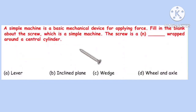Question 21. A simple machine is a basic mechanical device for applying force. Fill in the blank about the screw, which is a simple machine: 'The screws are [blank] wrapped around a central cylinder.' Correct option is B: Inclined plane.